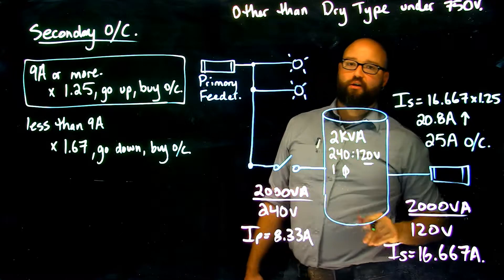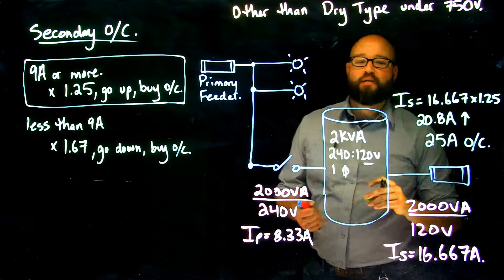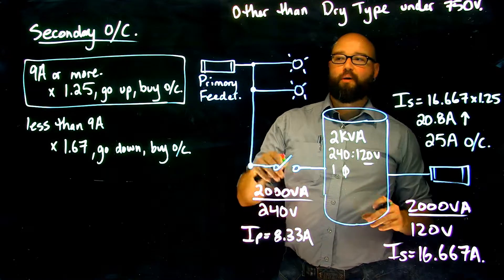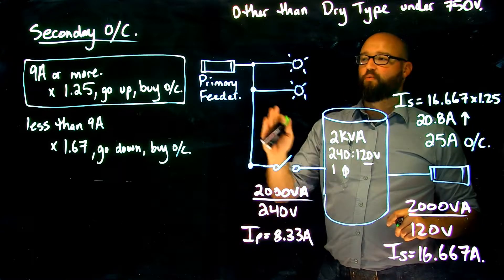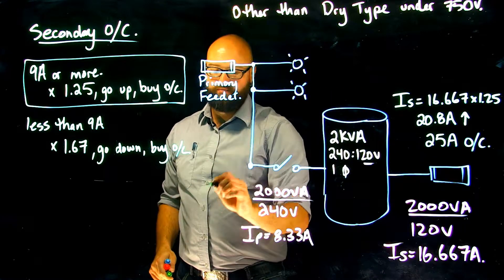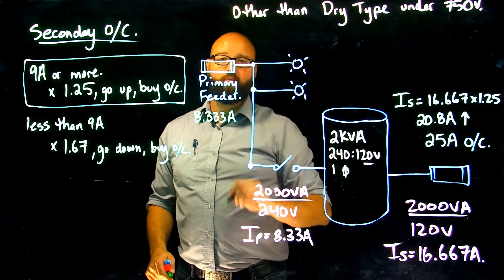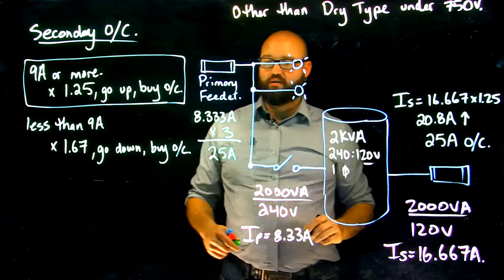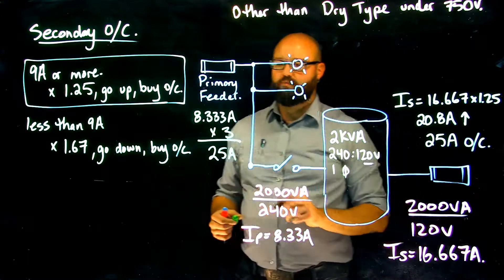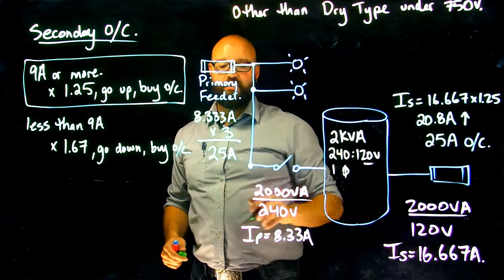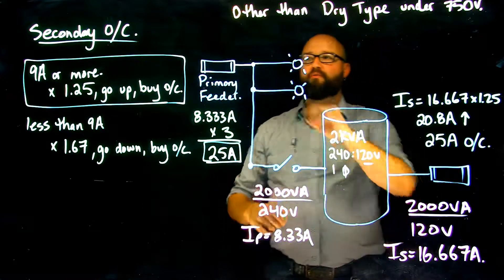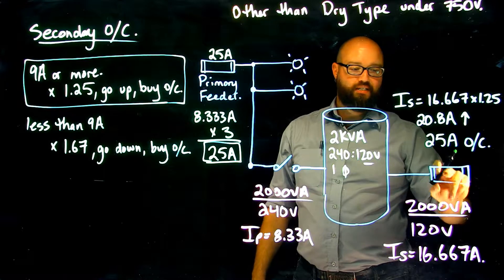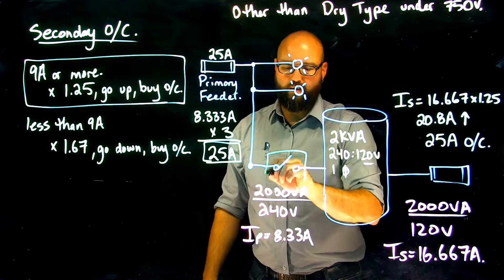We also need to look at the primary feeder. Subrule 4 tells me that if I have a 125% setting on my secondary overcurrent, I must also have no more than 300% of my rated primary current on my primary feeder. There is no exception — you cannot go up — so we take the primary rated current of 8.33 amps multiplied by 300%, which gives us 24.999 amps — essentially 25 amps. That means I must have a maximum 25 amp overcurrent on my primary feeder and a 25 amp overcurrent on my secondary in order to omit primary protection on this transformer.